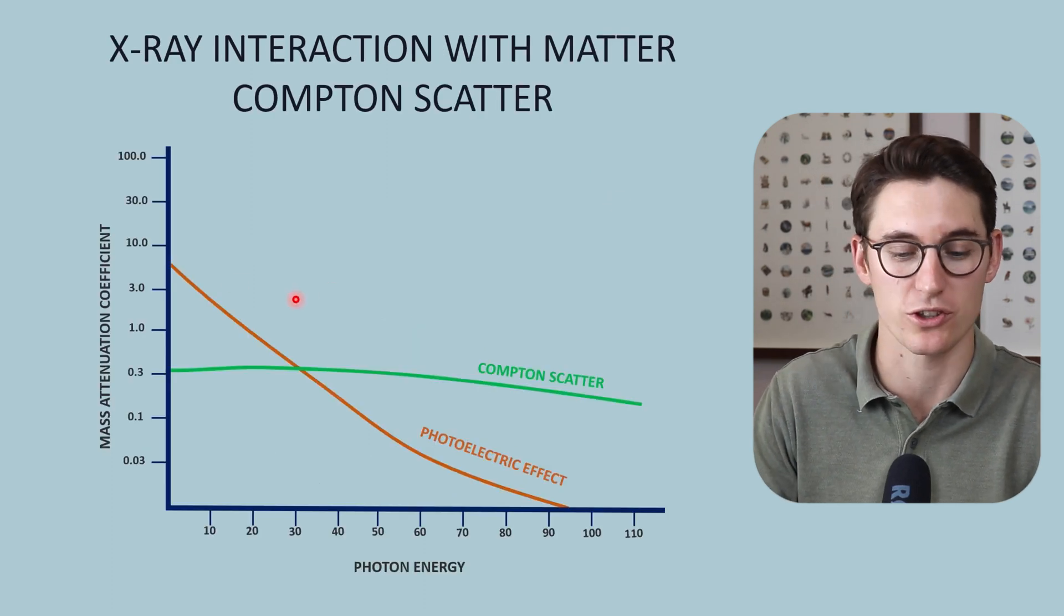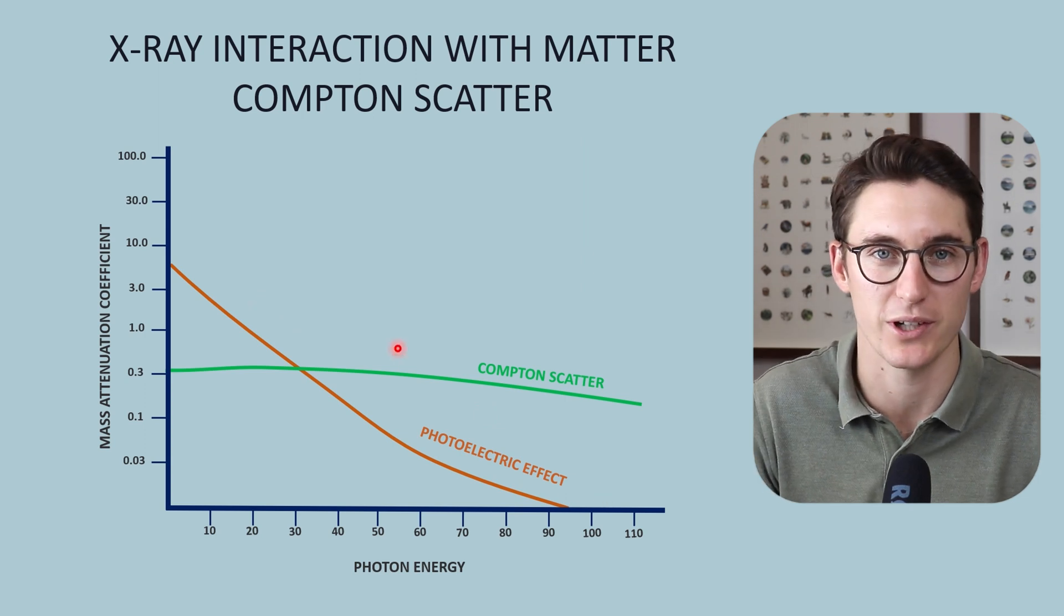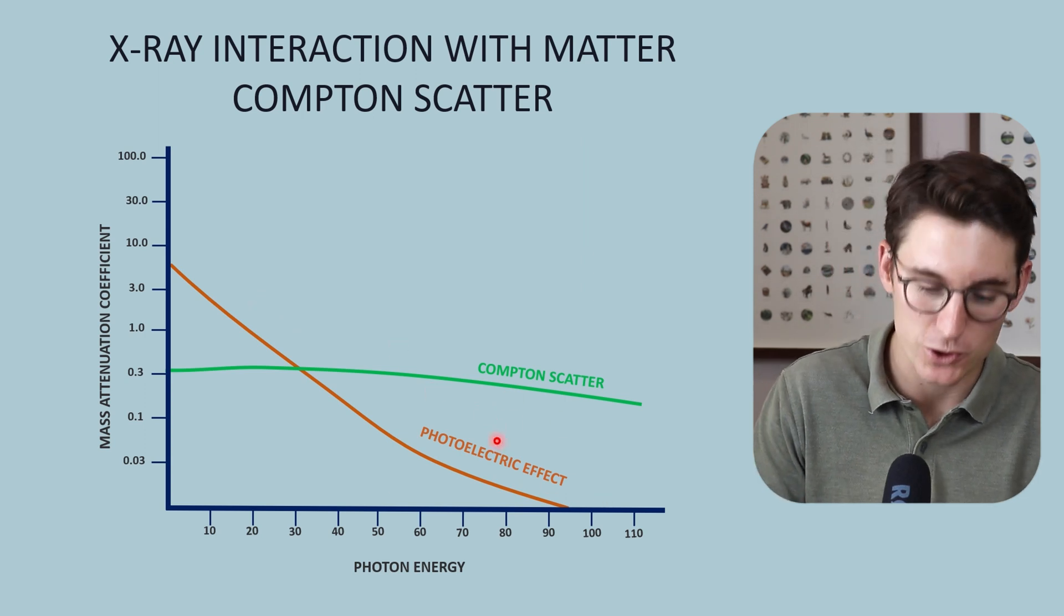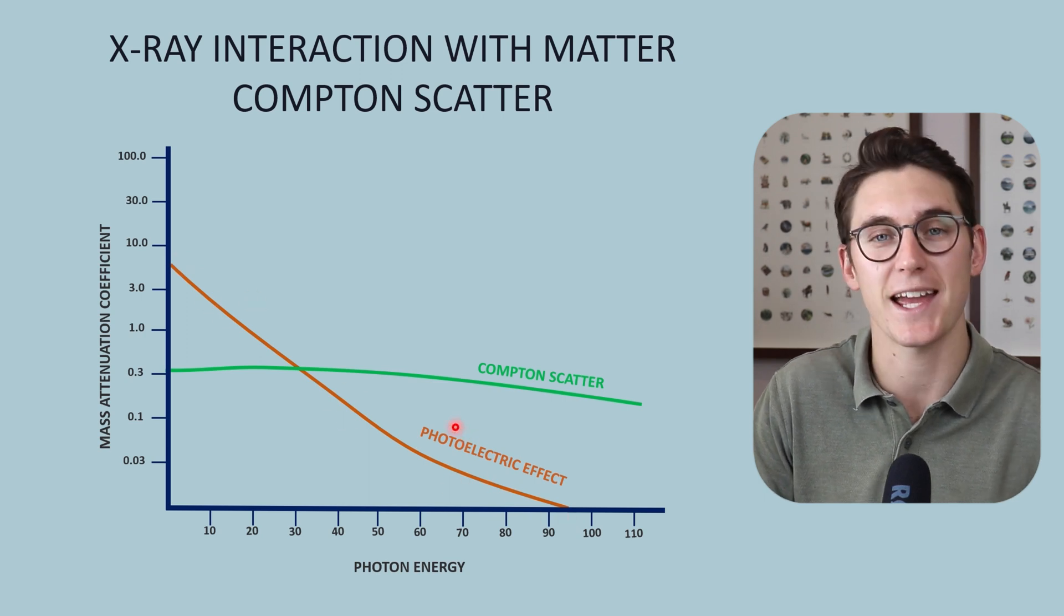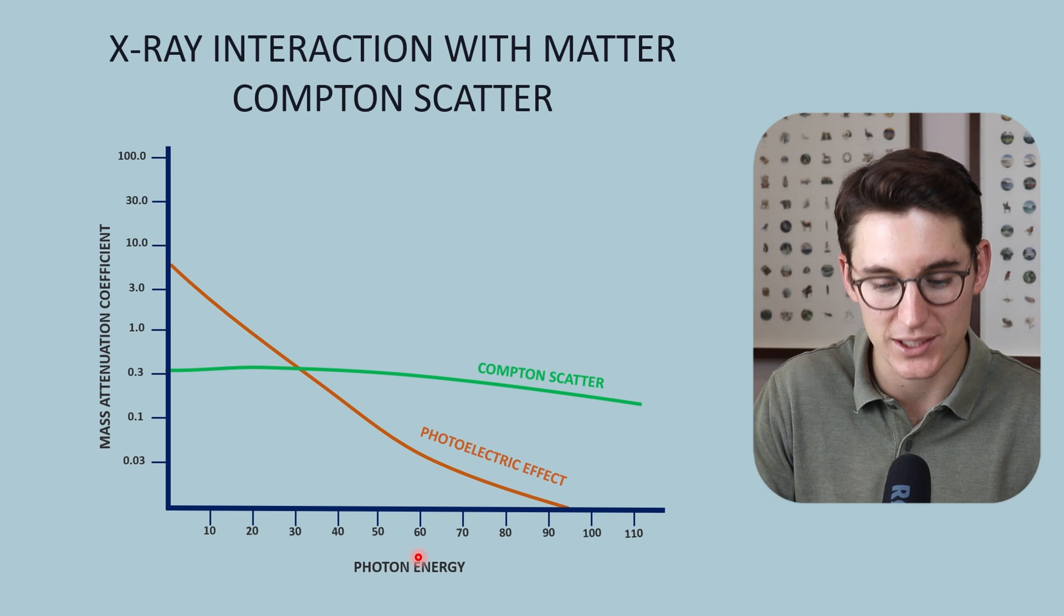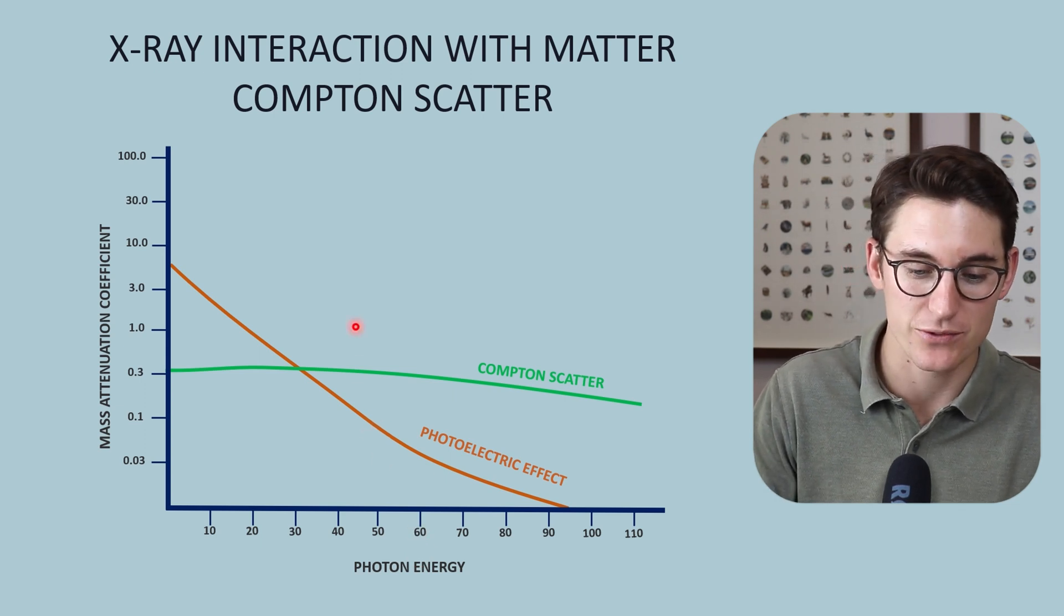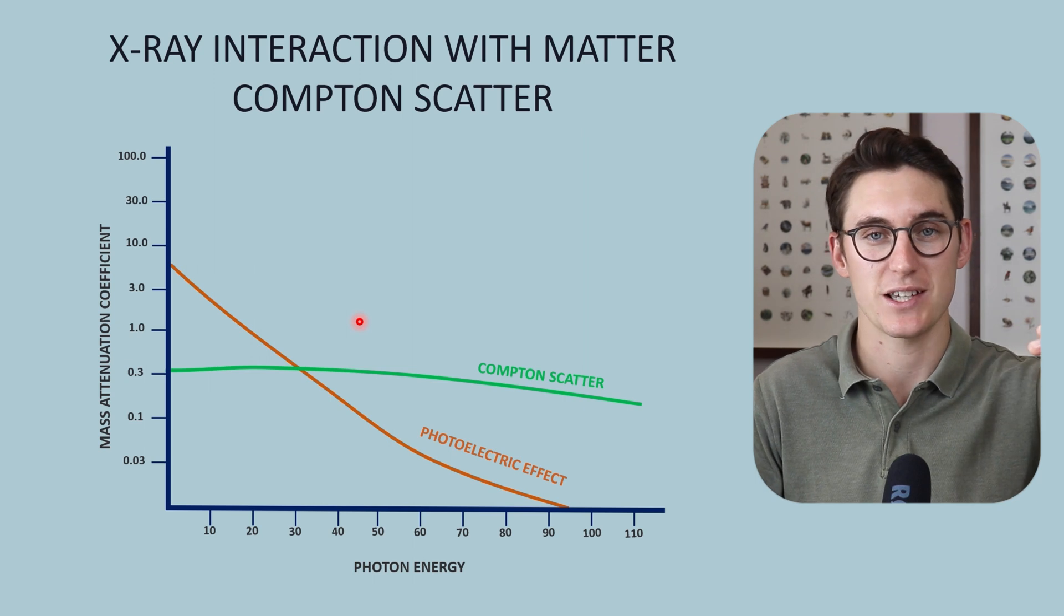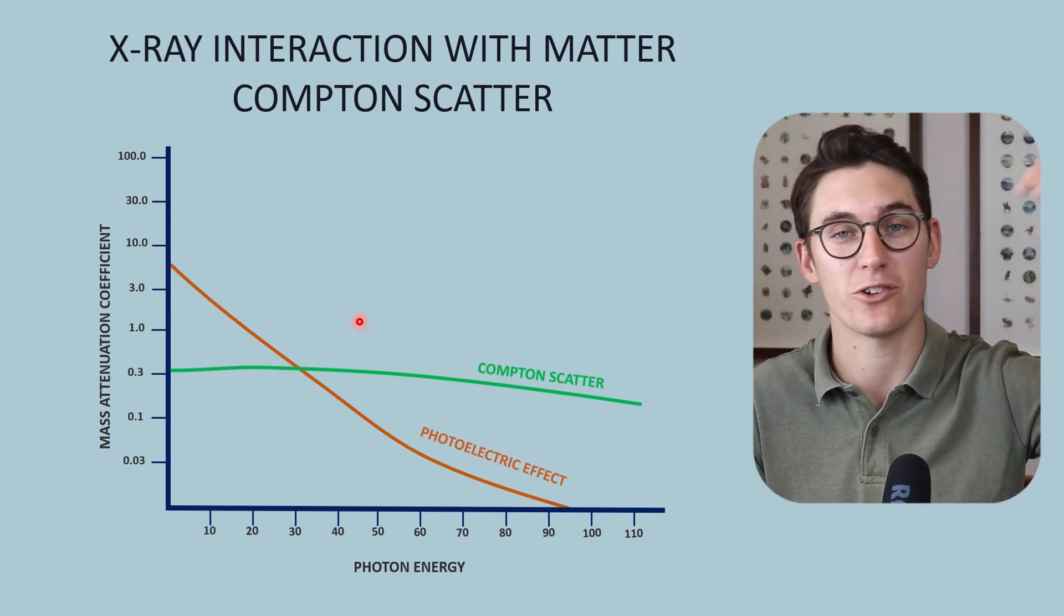Now we can draw this on a graph and you'll see that Compton scatter is quite different from the photoelectric effect. In the photoelectric effect, we saw the likelihood decreasing exponentially with increasing photon energy. We know that in more dense tissue, this photoelectric effect will increase, and in higher atomic number tissue, it will increase even further.